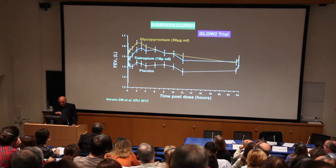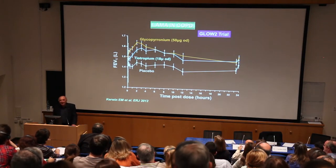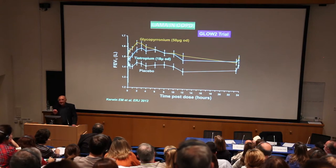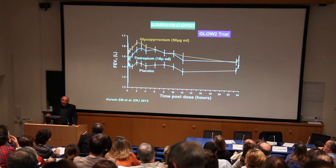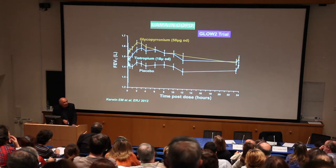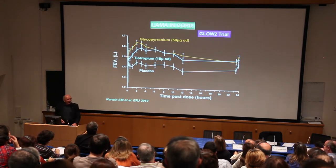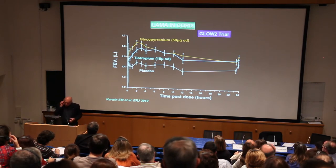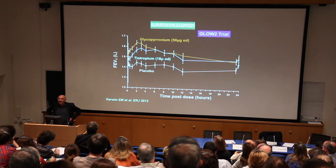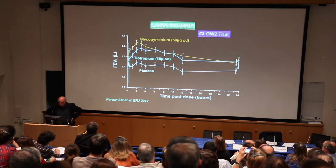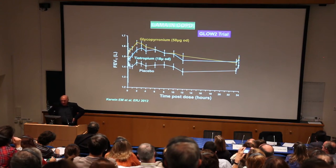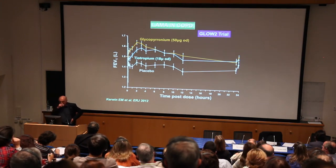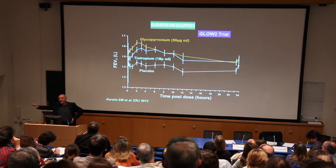There's a bit of confusion because the drug is called glycopyrrolate, but Novartis changed the name to glycopyrronium so you don't realize it's the old molecule. The GLOW-2 trial compared tiotropium versus glycopyrronium head-to-head, and you can see that they're identical — they have a 24-hour duration of action.